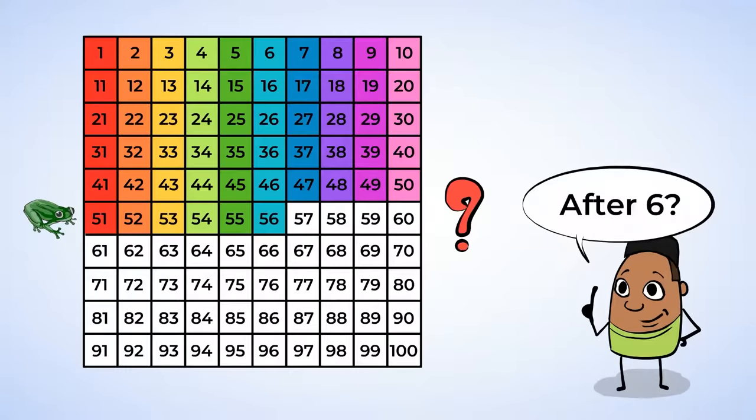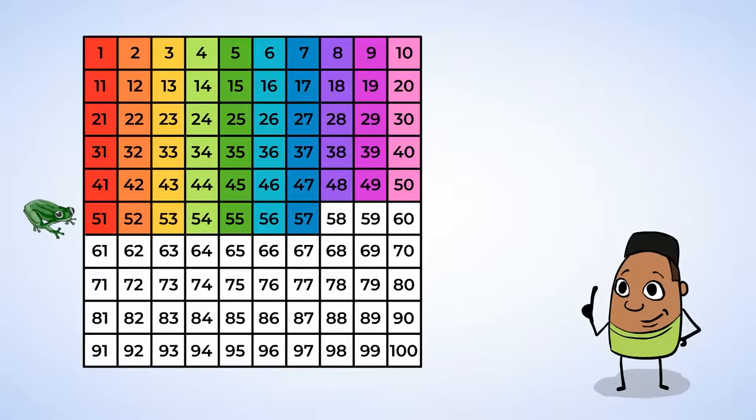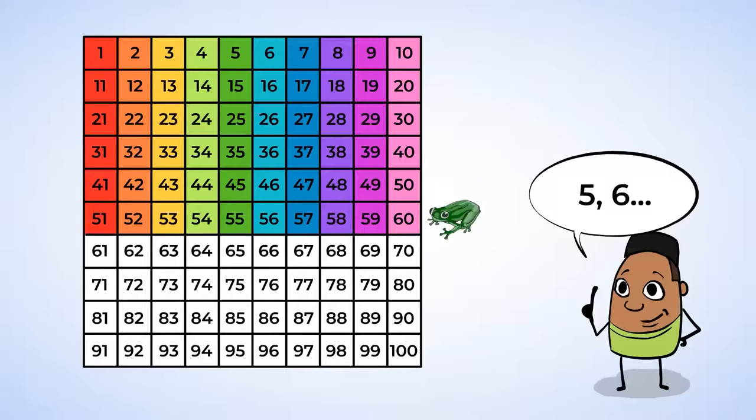And what comes after 56? Well, what comes after 6? 7. So after 56 is 57. Then 58. Then 59. And 60. After 59 is 60, because after 5 is 6. Then since a 0 is at the end of 60, froggy, would you please?